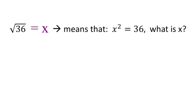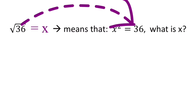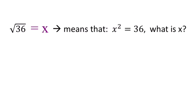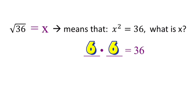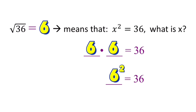And our radicand, which is 36, will become the answer to the exponential expression. What we're trying to do is determine the value of x such that when we multiply x by itself twice, it will give us 36. Meaning if we have blank times blank equals 36, it should be the same number. So those two numbers would be 6 times 6. So 6 times 6 is 36. We can rewrite this as 6 squared equals 36, and so our x is 6. Therefore, the square root of 36 equals 6.